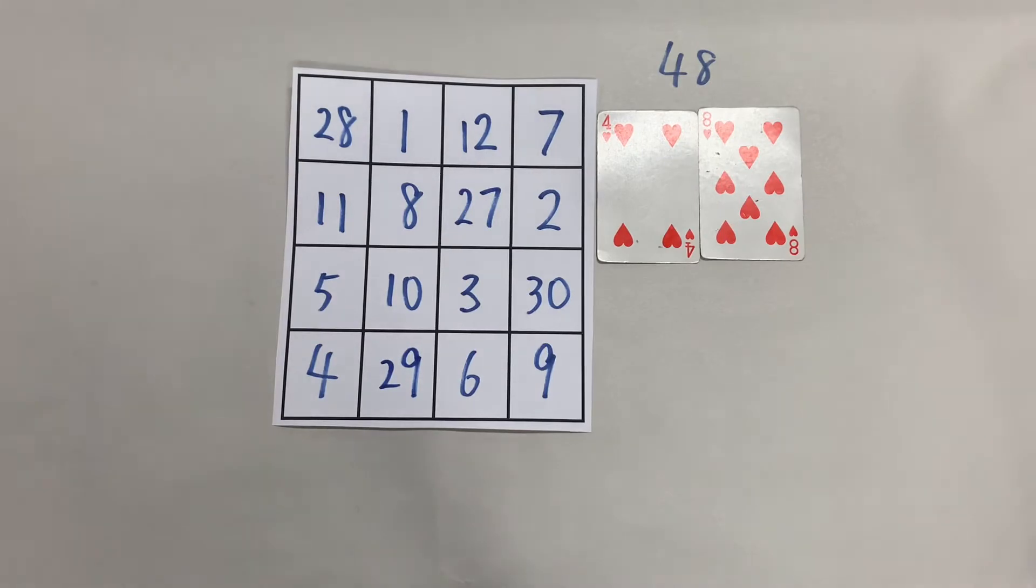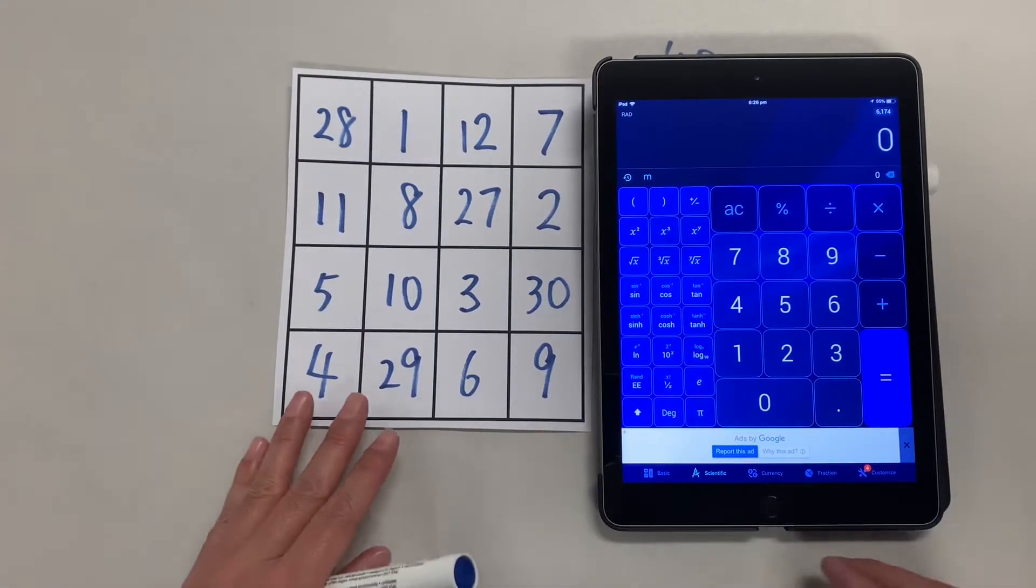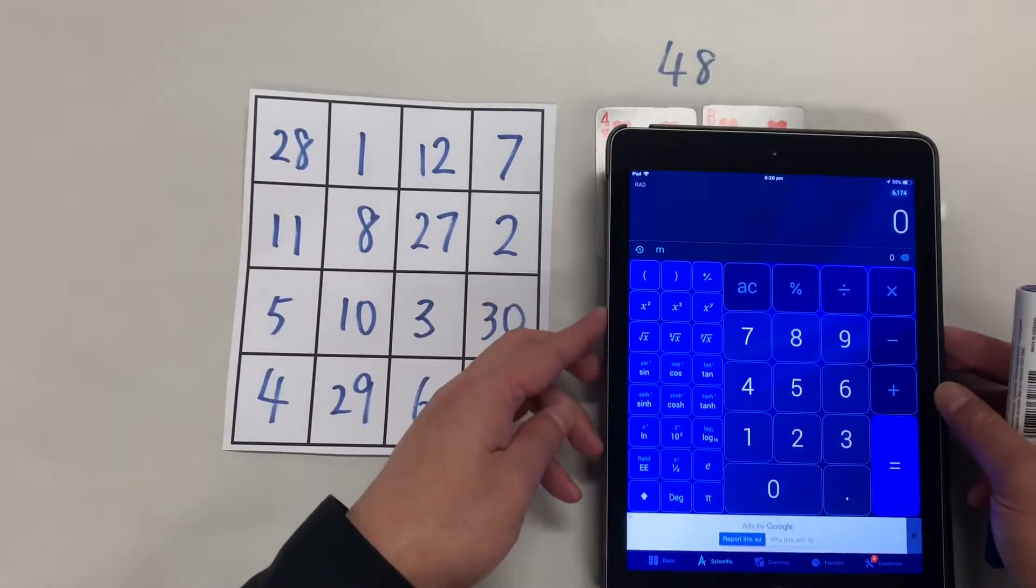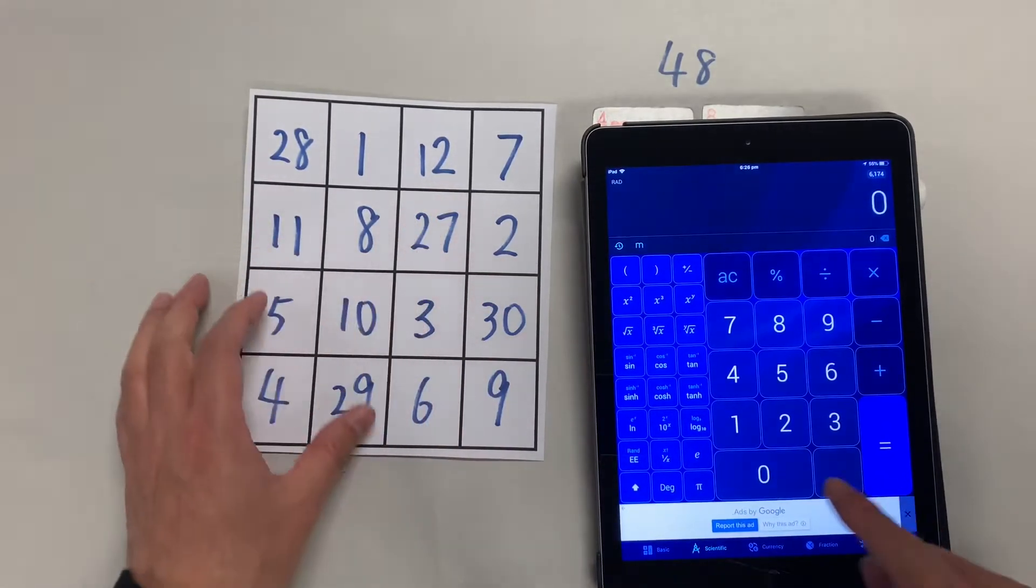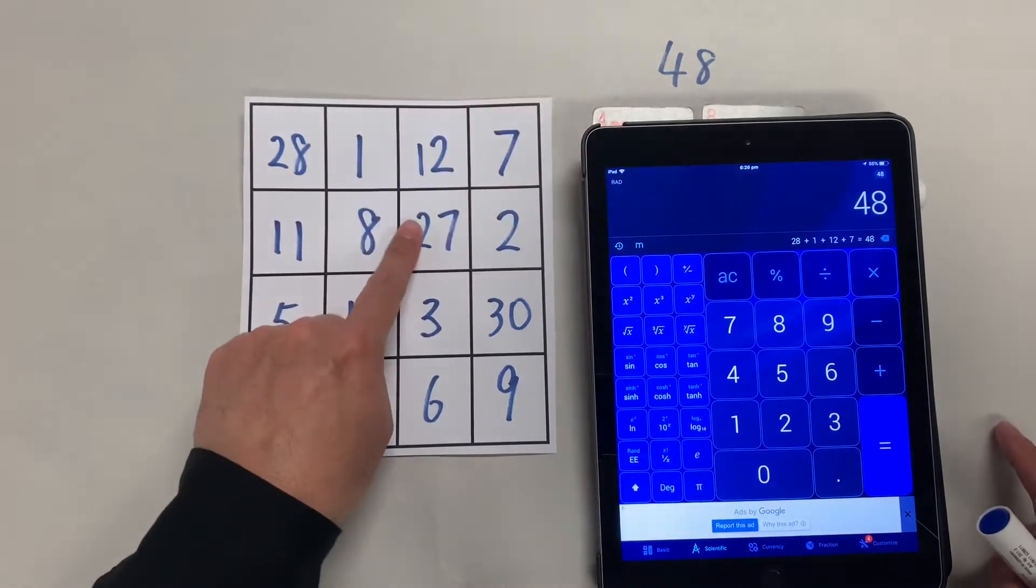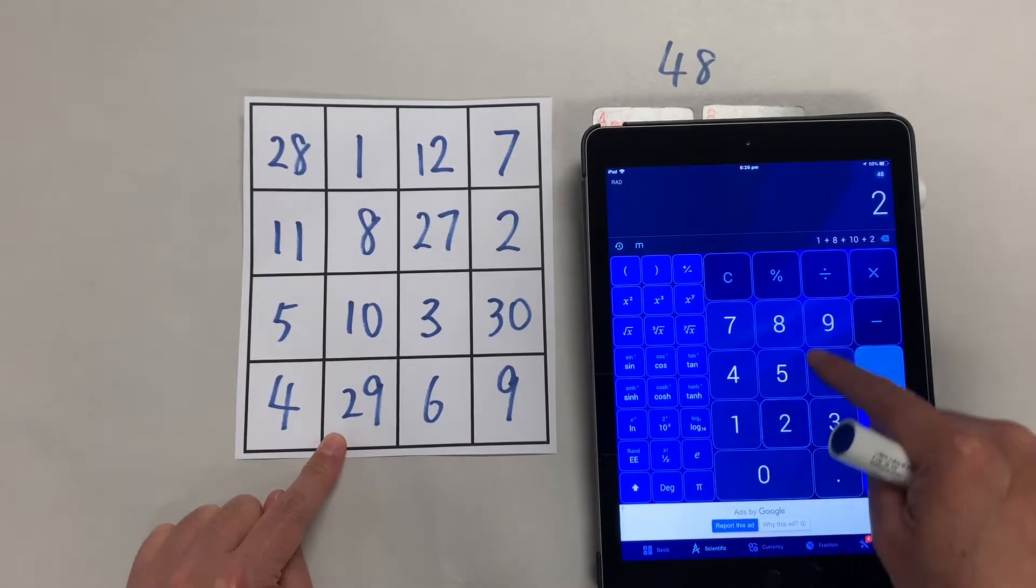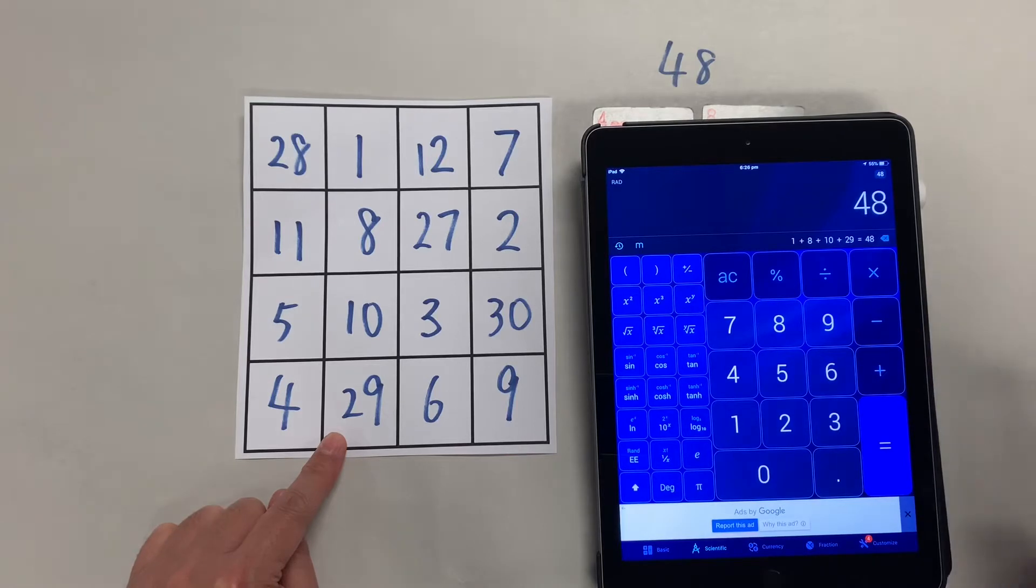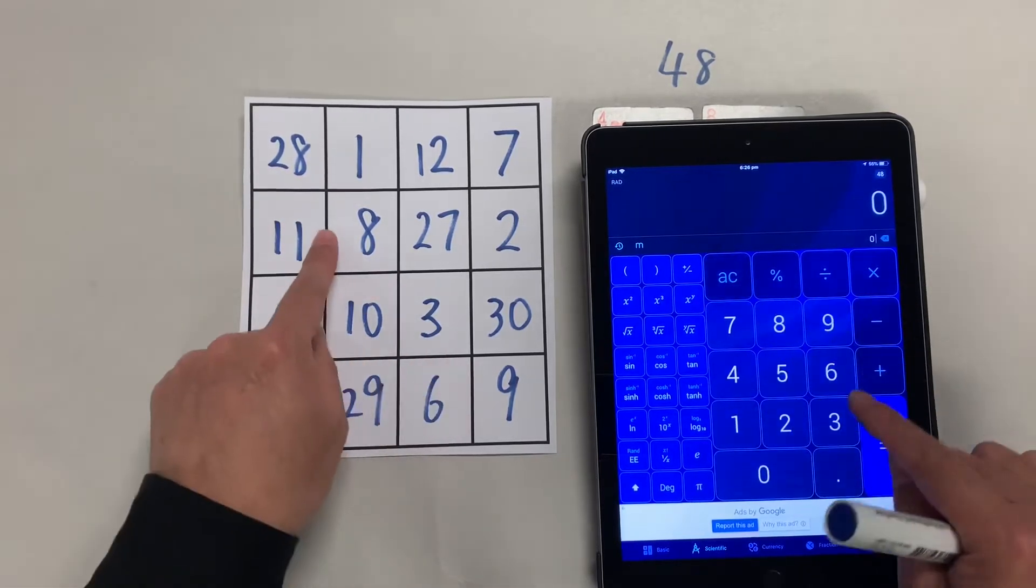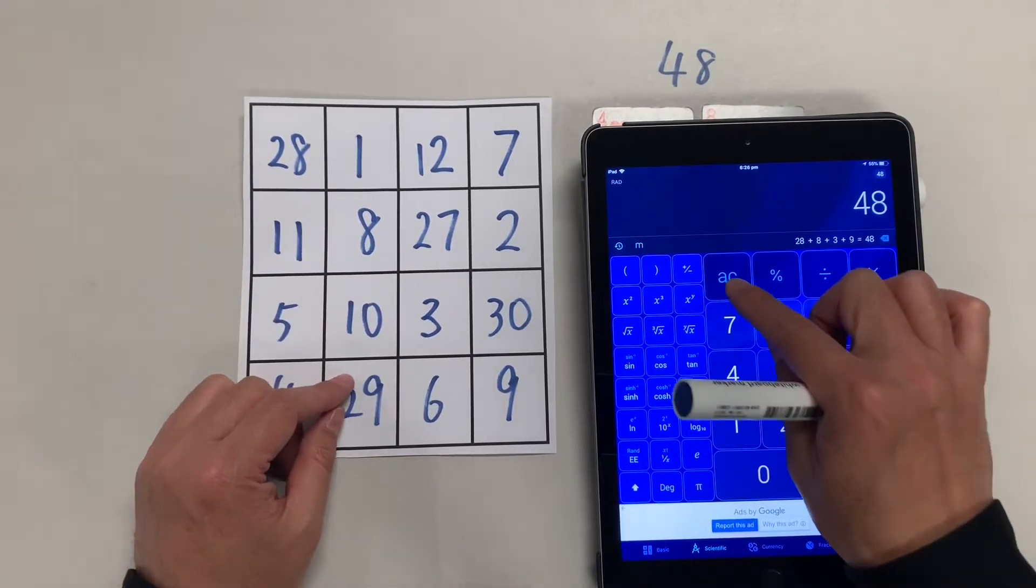So this is a magic square for you. Now what it does is amazing. Ready for it? Let's add 28 plus 1 plus 12 plus 7 is 48. Let's add this way: 1, 8, 10, 29 is 48. Diagonal: 28, 8, 3, and 9. Of course 48. Wait for it.